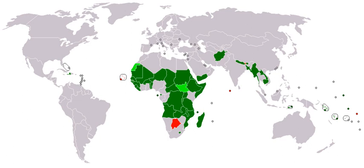Water pollution is a major problem in many developing countries, requiring ongoing evaluation and revision of water resource policy at all levels. It has been suggested that water pollution is the leading worldwide cause of death and disease, accounting for the deaths of more than 14,000 people daily. India and China have high levels of water pollution; an estimated 580 people in India die of water pollution-related illness every day, and about 90% of the water in the cities of China is polluted. As of 2007, half a billion Chinese had no access to safe drinking water.